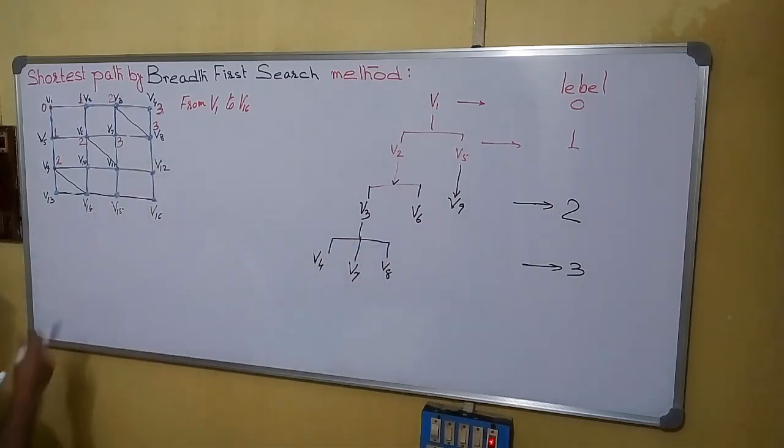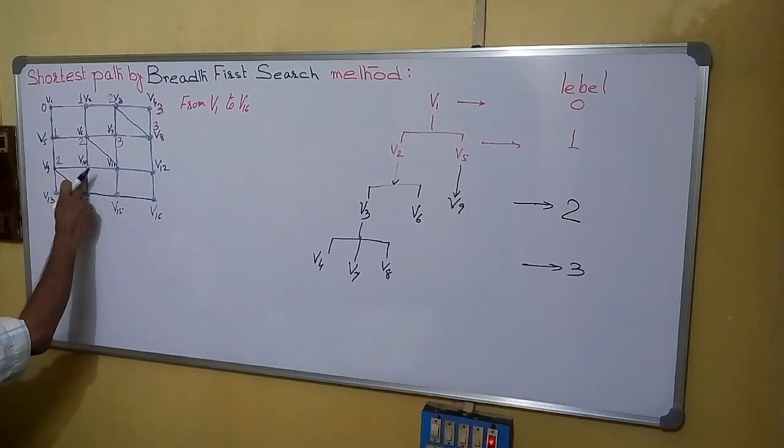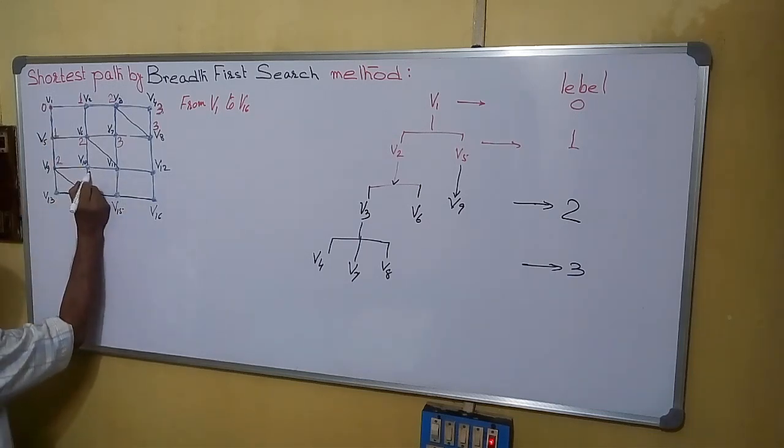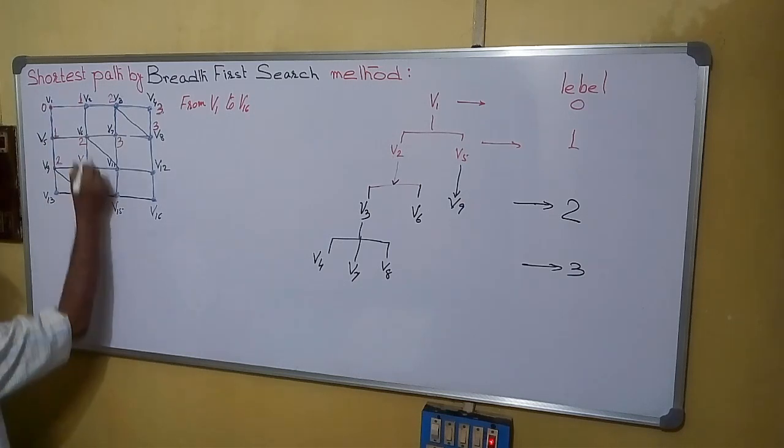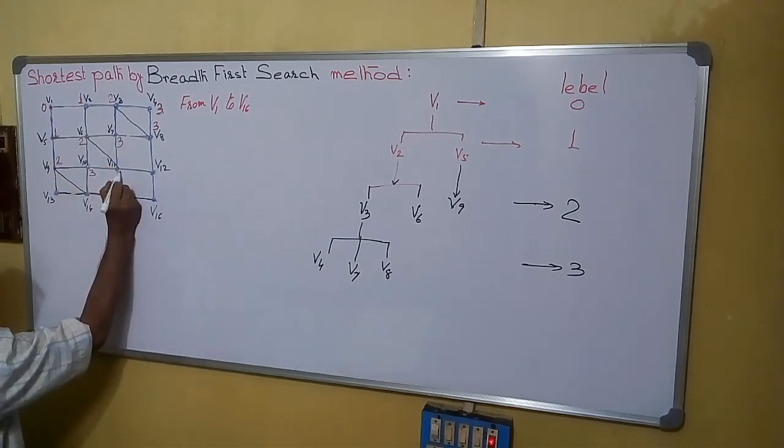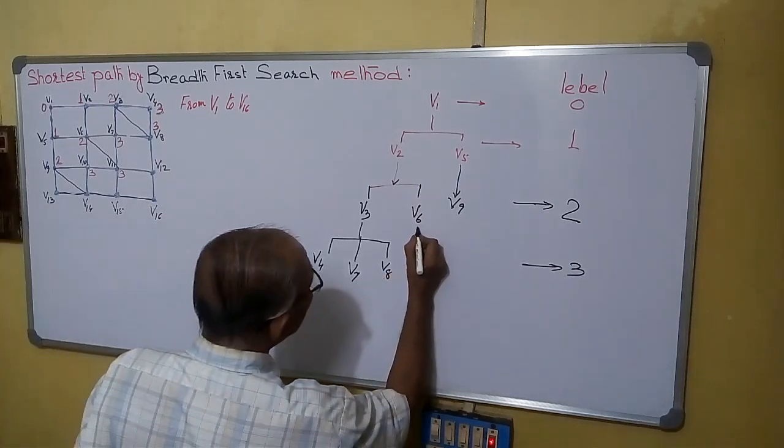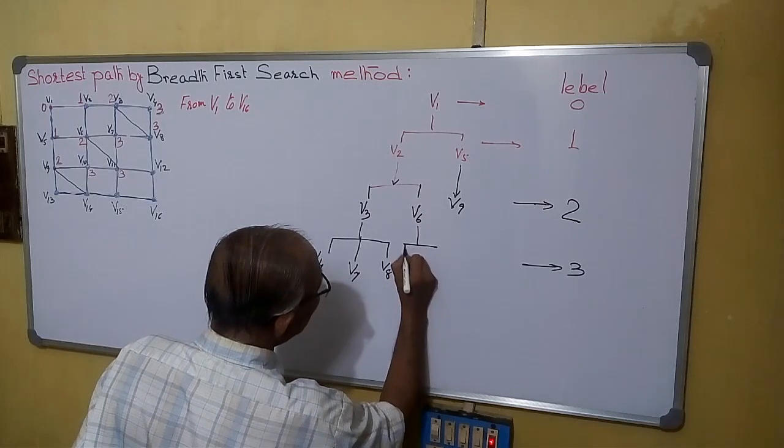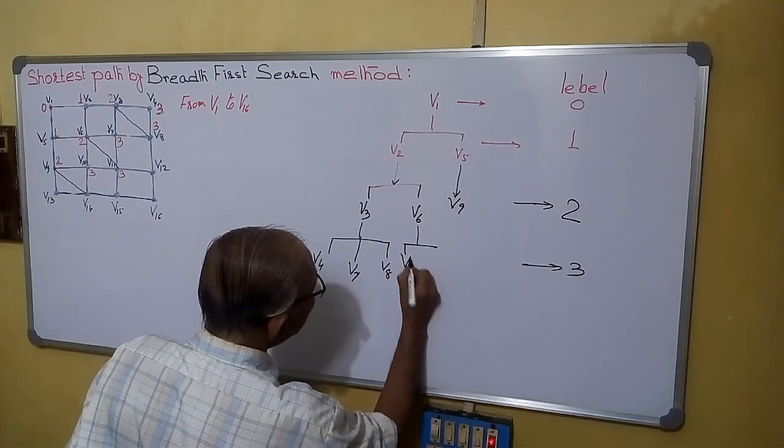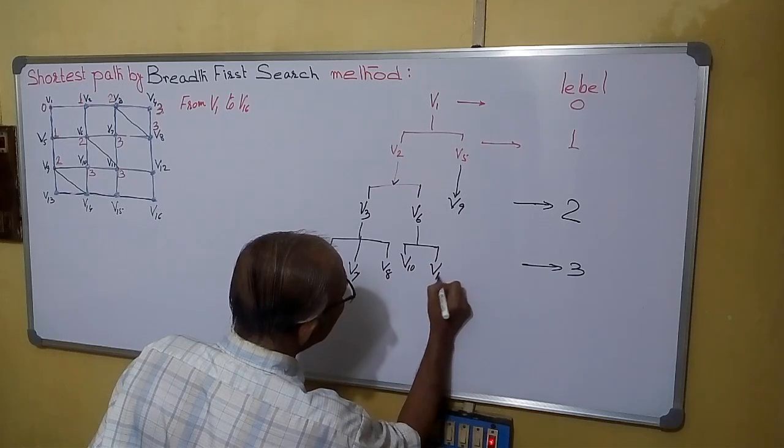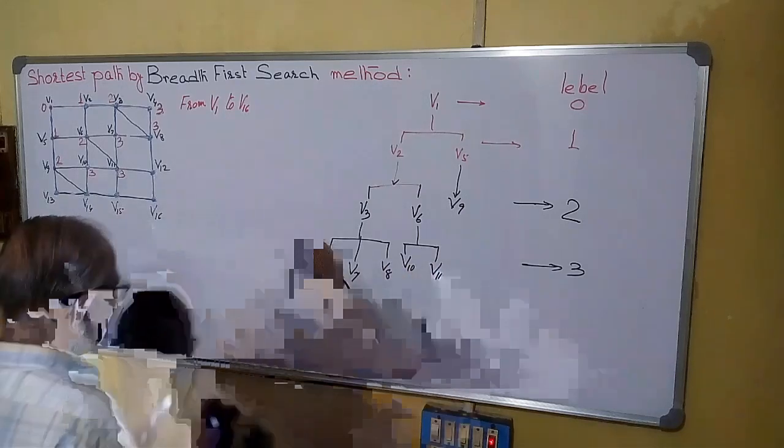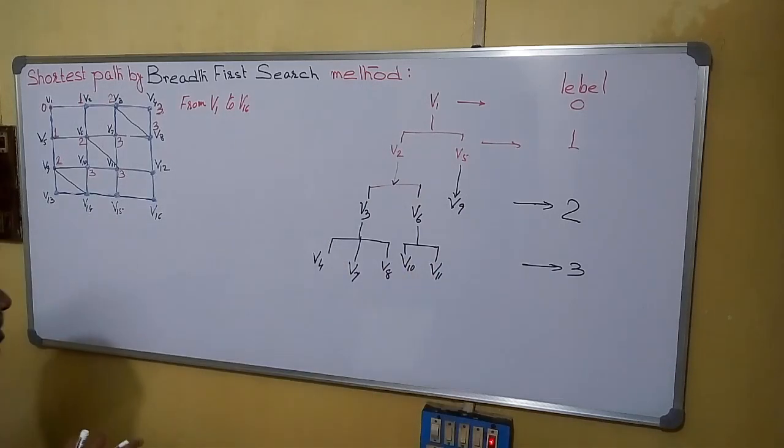Then V6 is there. From V6 we can go to V10 and V11. This will also be 2 plus 1, 3. This is also 2 plus 1, 3. V7 is already marked. We will not go. So from V6 we are going to V10 and V11. All these are marked as level 3.